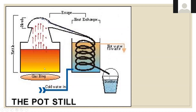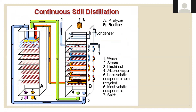The continuous still, also known as the Coffey or column still, has two tanks: an analyzer and a rectifier. Heat is utilized in the kettle, vapors come off at the head and escape into the heat exchanger, and cold water is added to get your distilled spirit. In the continuous still, your wash goes into the rectifier, steam is added in the analyzer, and you get alcohol vapor and less volatile components recycled back through.